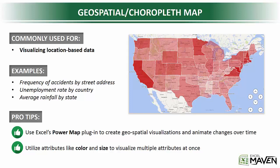Pro tip: you can use Excel's Power Map plugin to create geospatial visualizations, as well as animate changes over time. Excel's Power Map tool was introduced in 2013 and only applies to certain versions of Excel, so check out support.office.com to see if you can enable the plugin. Second pro tip: utilize attributes like color and size to visualize multiple attributes at once.